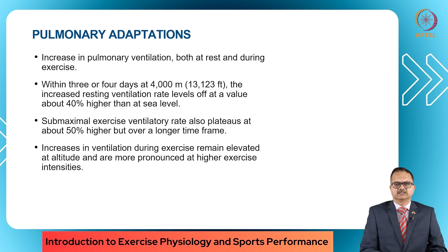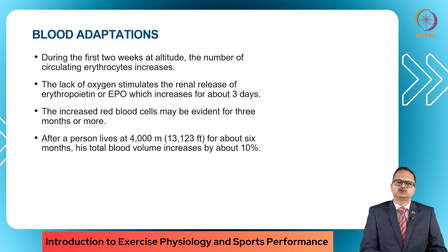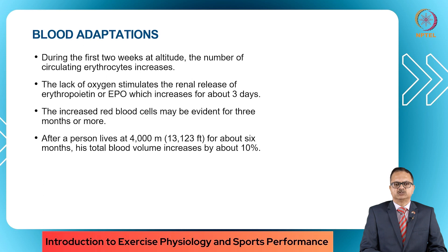Increases in ventilation during exercise remain elevated at altitude and are more pronounced at higher exercise intensities. During the first two weeks at altitude, the number of circulating erythrocytes — red blood cells — increases. The lack of oxygen stimulates the renal release of erythropoietin. After a person lives at 4000 meters for about six months, total blood volume increases by about 10%. Blood hemoglobin concentration also tends to increase with elevation.